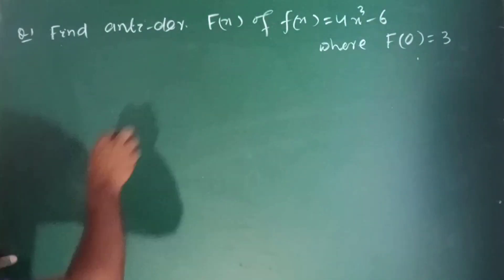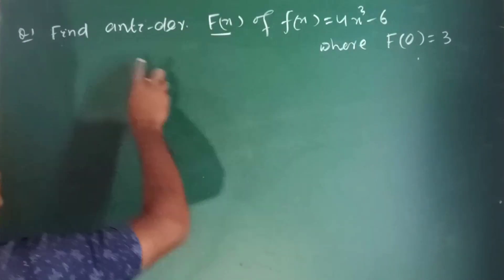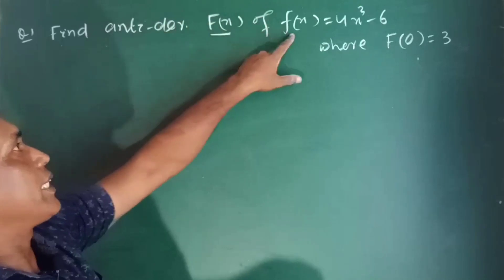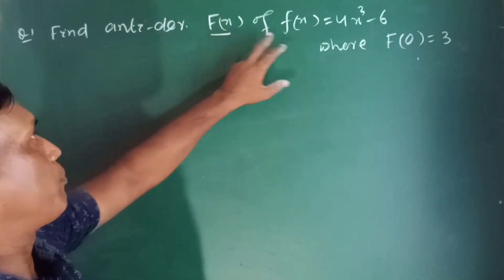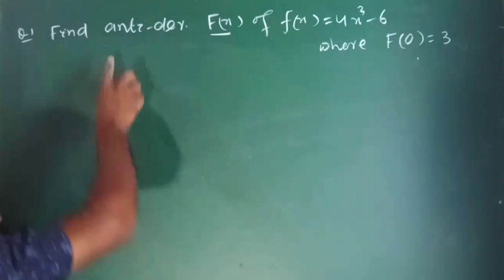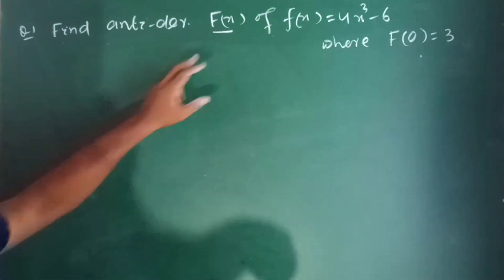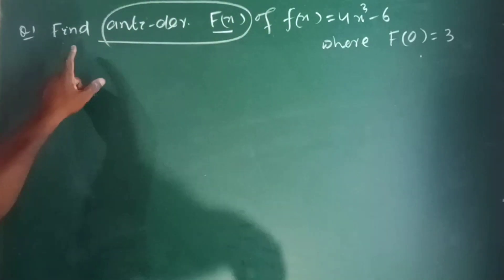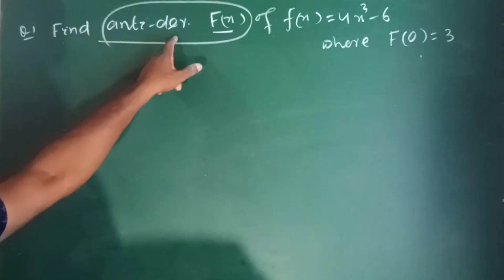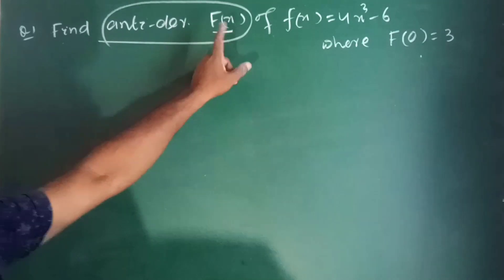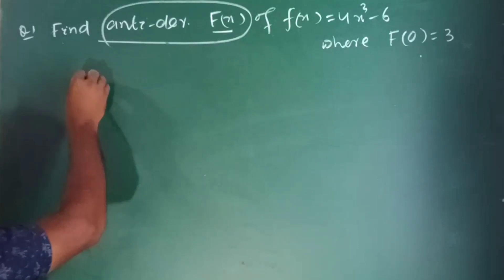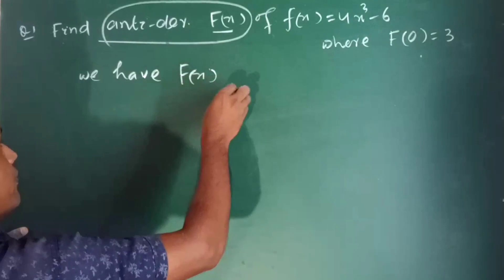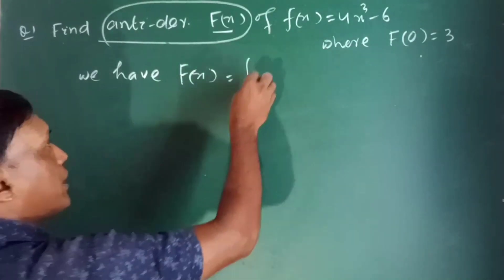Look at here: capital F of x is a function which is the anti-derivative of small f of x. That means capital F of x is the integration of small f of x. We have to find the anti-derivative of f of x, which gives us capital F of x.